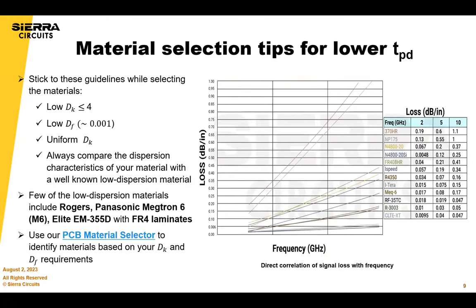In terms of picking materials, we've grouped some into common buckets. On the right, we've listed some common materials that we stock on a regular basis and how they perform. Some low-dispersion materials include Rogers and Panasonic Megatron, among others. You can always call us to see what we have in stock and to help you select the right materials — that's definitely the first step.